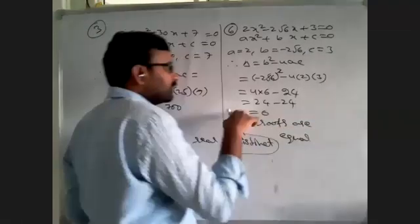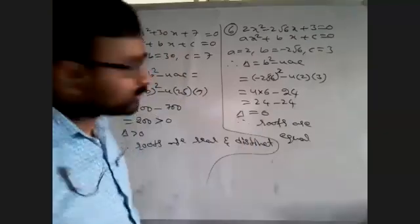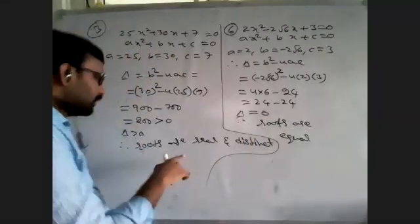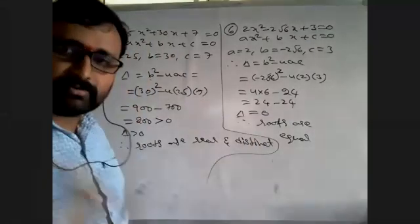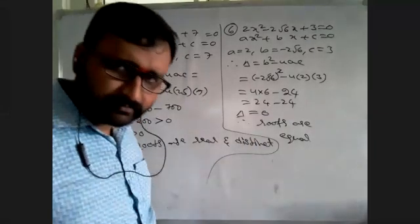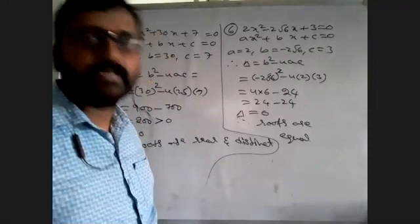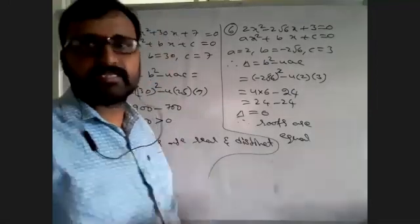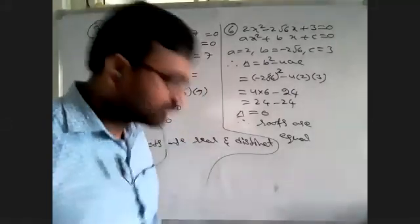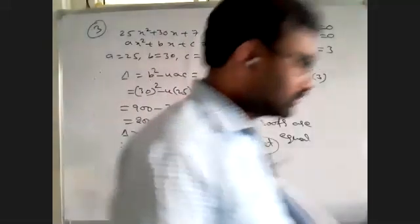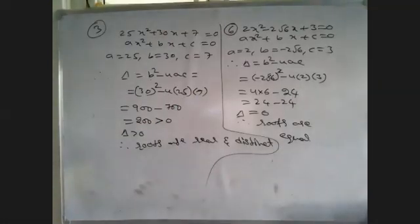When Delta equals 0, the roots are equal. When Delta is greater than 0, the roots are real and distinct. When Delta is less than 0, the roots are imaginary.